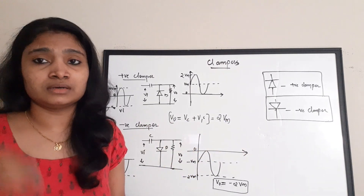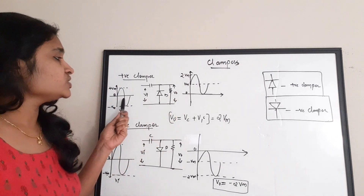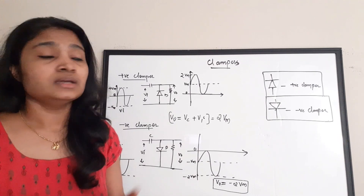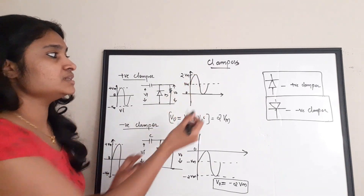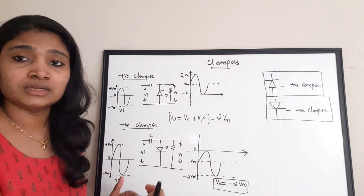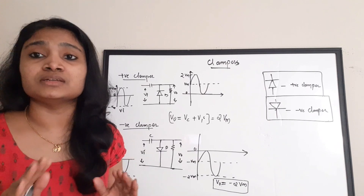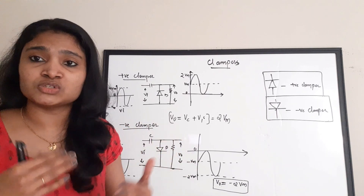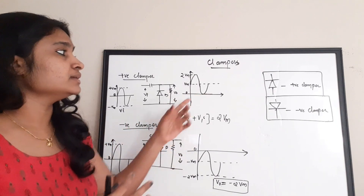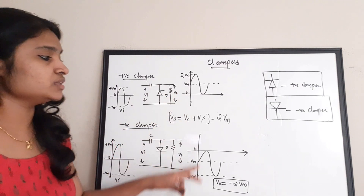In a positive clamper, the waveform is entirely shifted towards the positive quadrant — there is no waveform present in the negative quadrant. In a negative clamper, the waveform is entirely shifted towards the negative quadrant and there is no waveform in the positive quadrant. The positive clamper adds a DC level to the input waveform, whereas the negative clamper subtracts it.